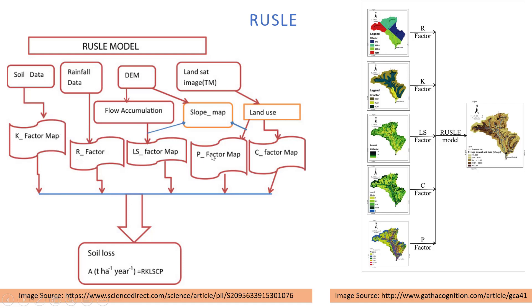Using all these geospatial satellite-based datasets we calculate the K factor, R factor, LS factor, P factor, and C factor maps. By multiplying all of these factor maps we generate the soil loss map, and we can then classify it into different categories such as severe soil loss or moderate soil loss.